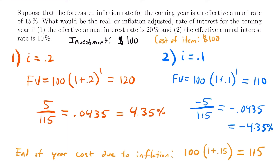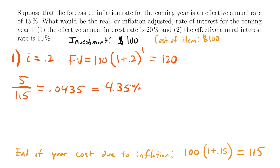Now we want a general formula for calculating the real rate of interest in any scenario. We'll analyze the calculation we just did. We found the $5 by subtracting the year-end cost of the item from the year-end value of the investment, so we rewrite it as (120 − 115) ÷ 115. We then substitute: 120 = 100 × (1 + 0.2) and 115 = 100 × (1 + 0.15), giving us [100×(1+0.2) − 100×(1+0.15)] ÷ [100×(1+0.15)].